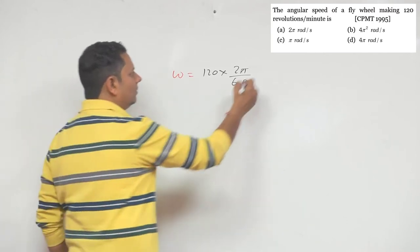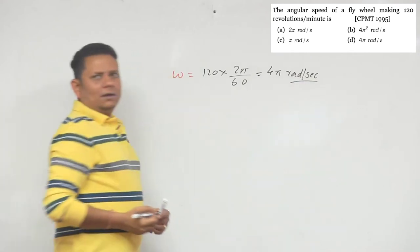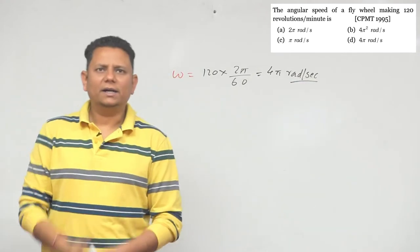After calculation, this will be 4π radians per second. This would be my correct answer.